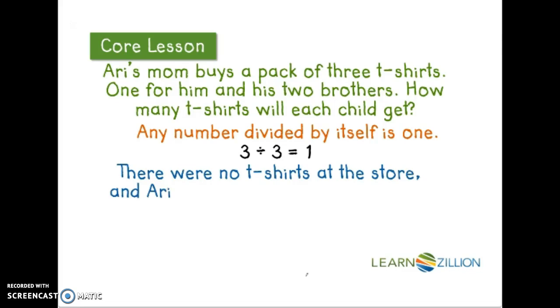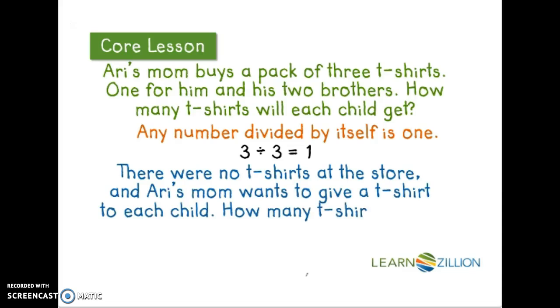There were no t-shirts at the store and Ari's mom wants to give a t-shirt to each child. How many t-shirts would each child get? Well, this is telling us that we have 0 and we need to split it into 3 groups. 0 divided by 3 is 0. Each child would still get 0 shirts.